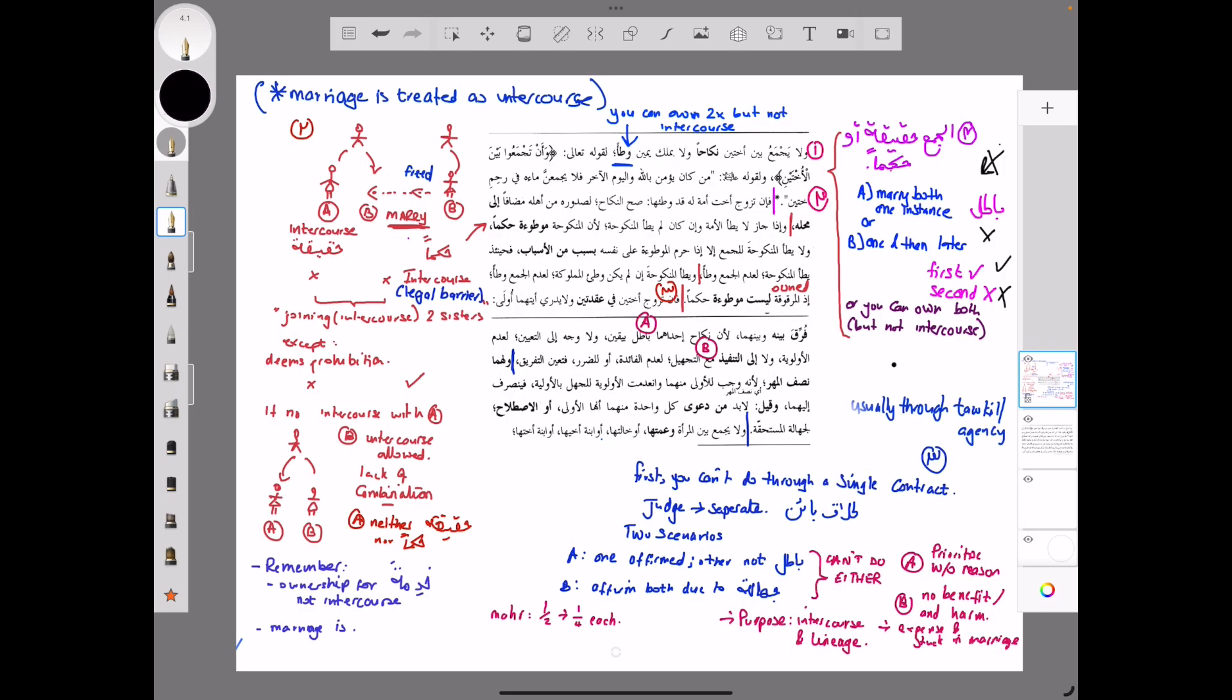Okay, so the idea here is that you don't do jama' between two sisters. When you own one or you own two, you're only allowed to have wati' with one. Otherwise you're falling foul of the verse here in the Quran and the hadith of the Prophet sallallahu alayhi wa sallam. The second scenario, and I'll read the Arabic for you: fa in tazawwaja ukhta amatin lahu qad wati'aha.